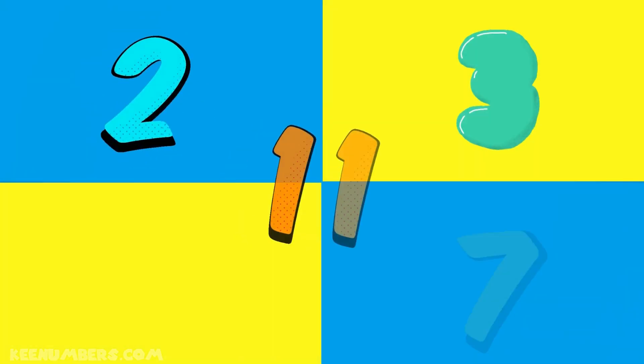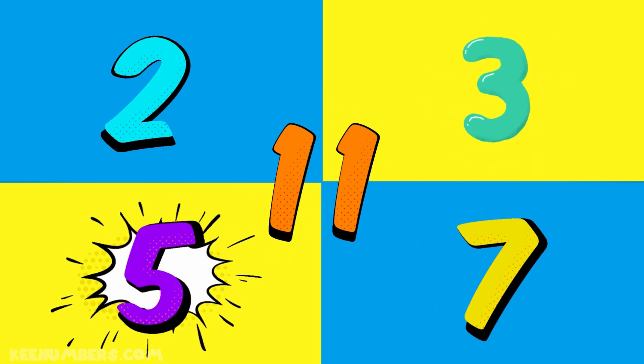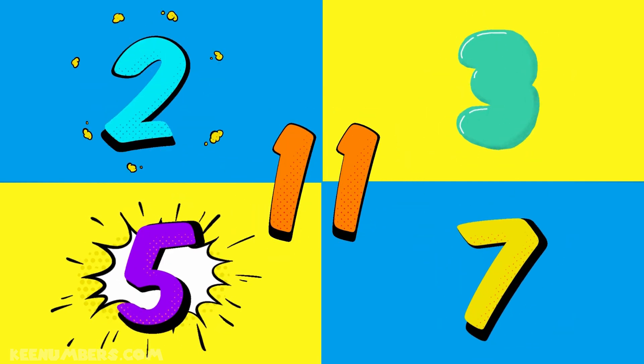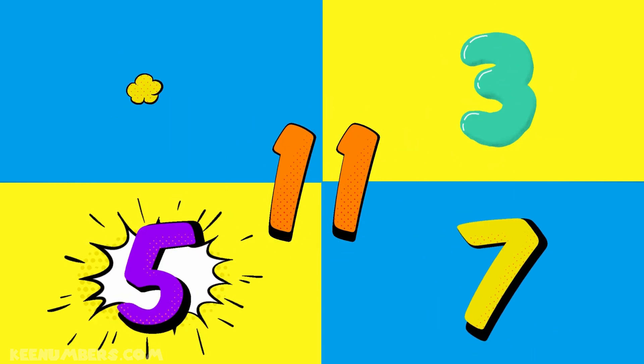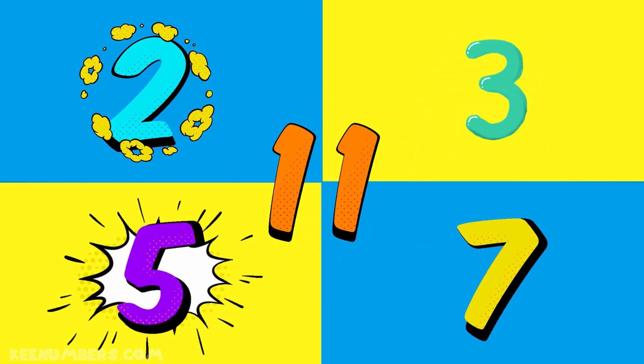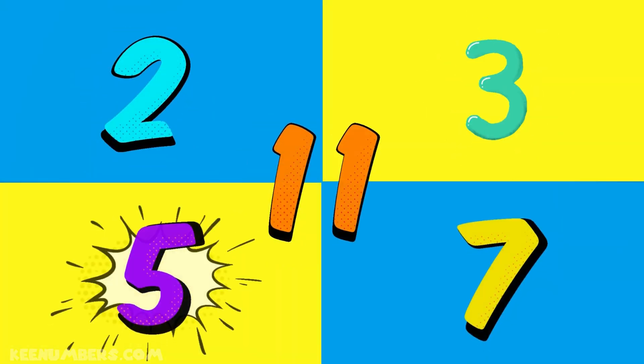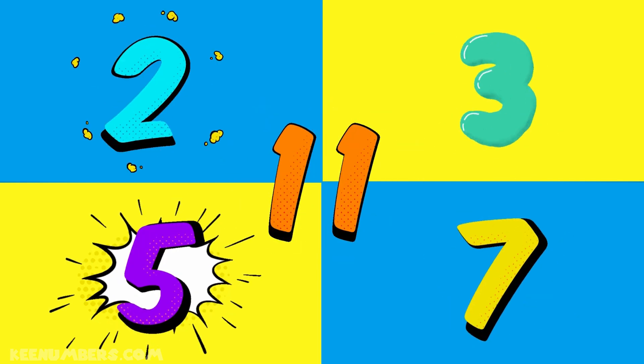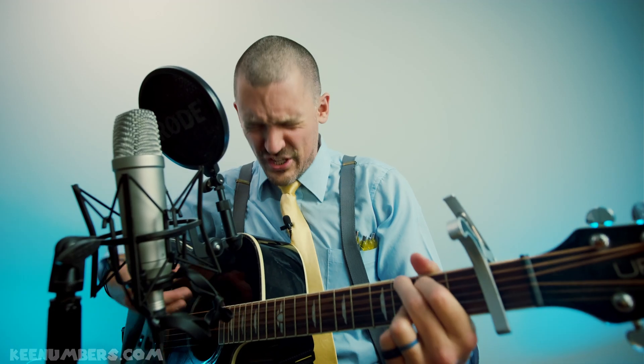Let's say them again: 2, 3, 5, 7, 11. We should do it again — 2, 3, 5, 7, 11. Faster: 2, 3, 5, 7, 11. Slower: 2, 3, 5, 7, 11.